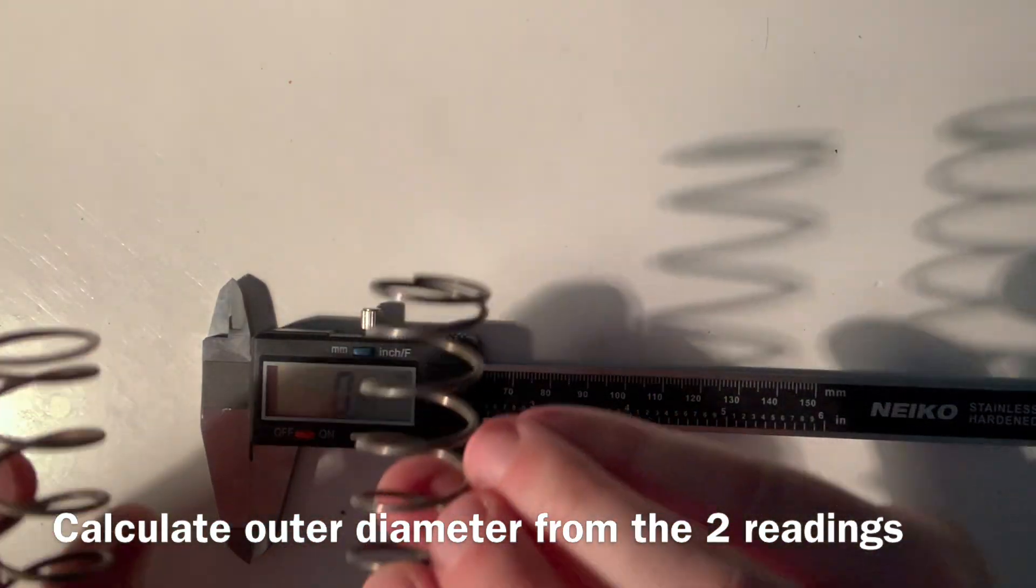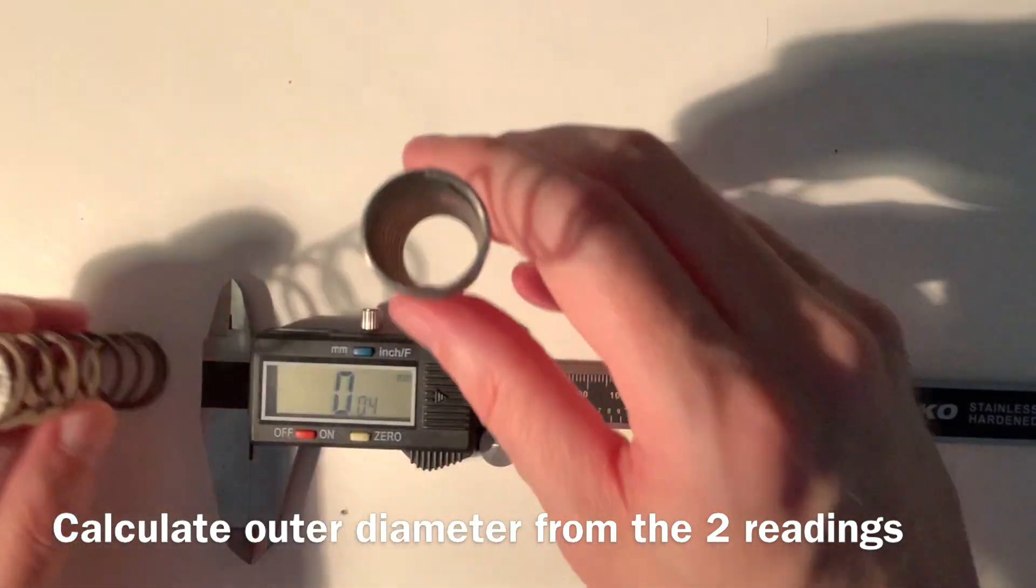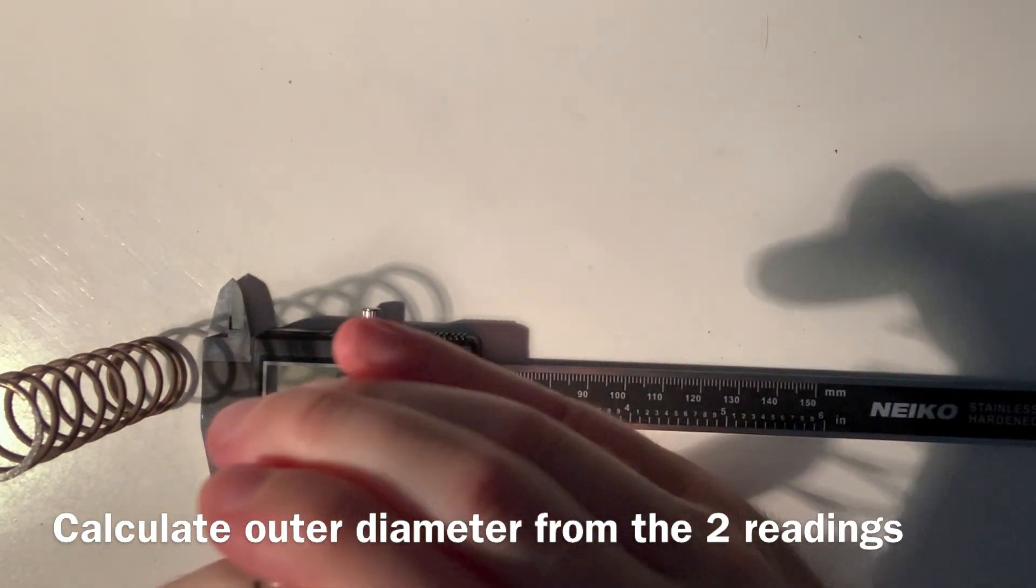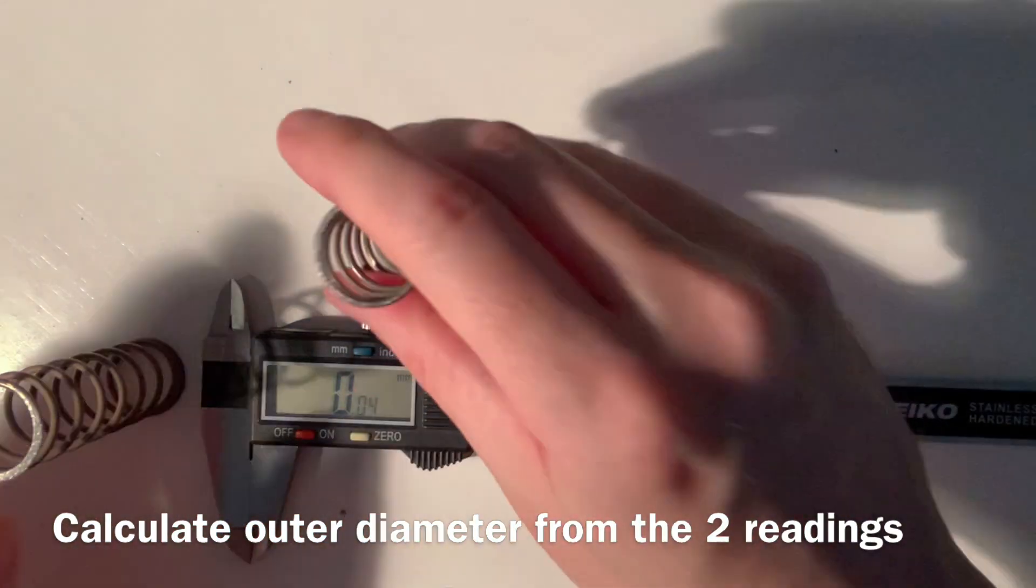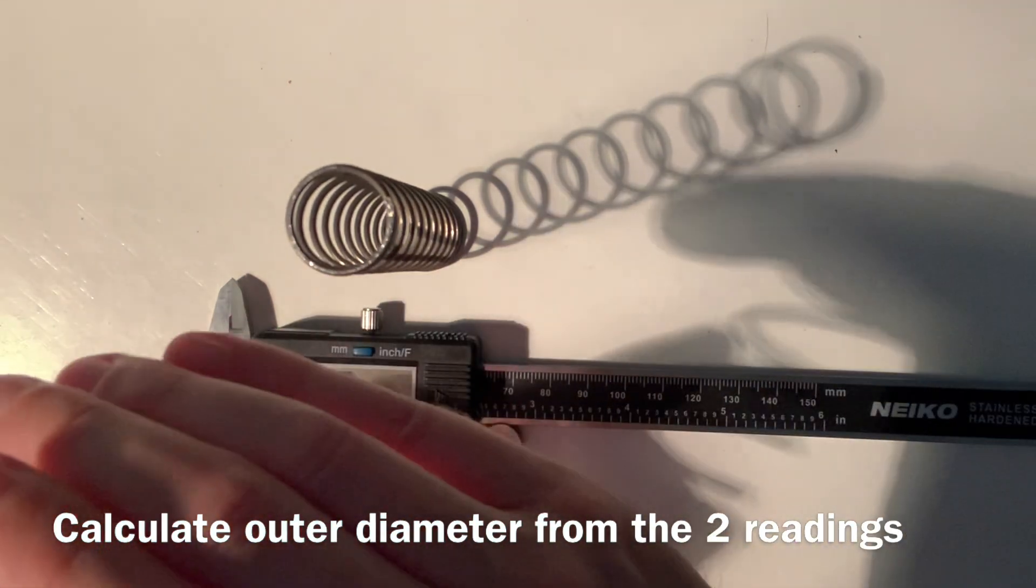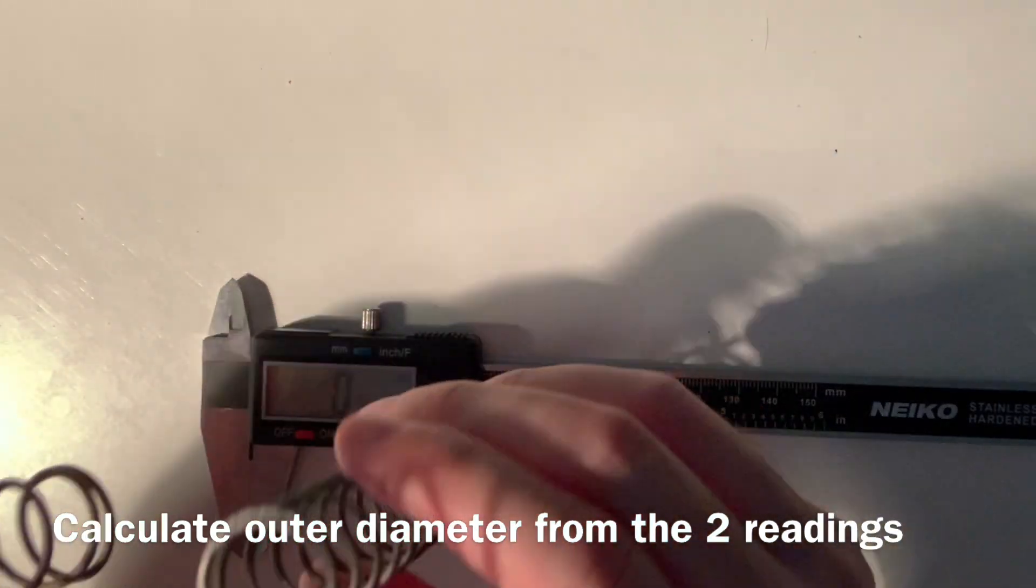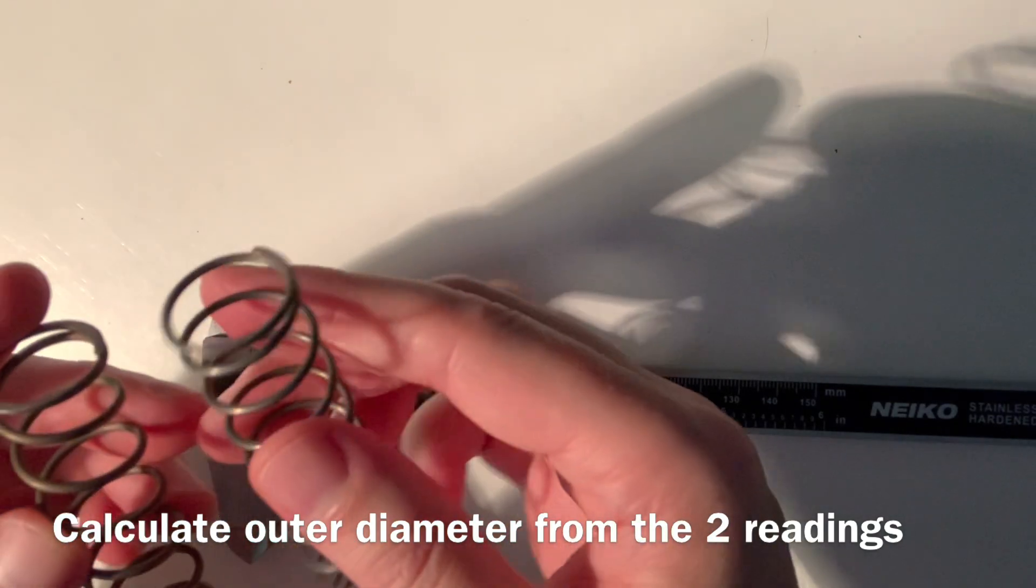And the compressed length is also going to be different. This one I can compress, it's very difficult but I can compress it, but it's very hard to get an accurate measurement. This one is even more difficult to compress all the way to get an accurate compressed length. But I do believe that this one has a smaller compressed length when it's fully compressed.